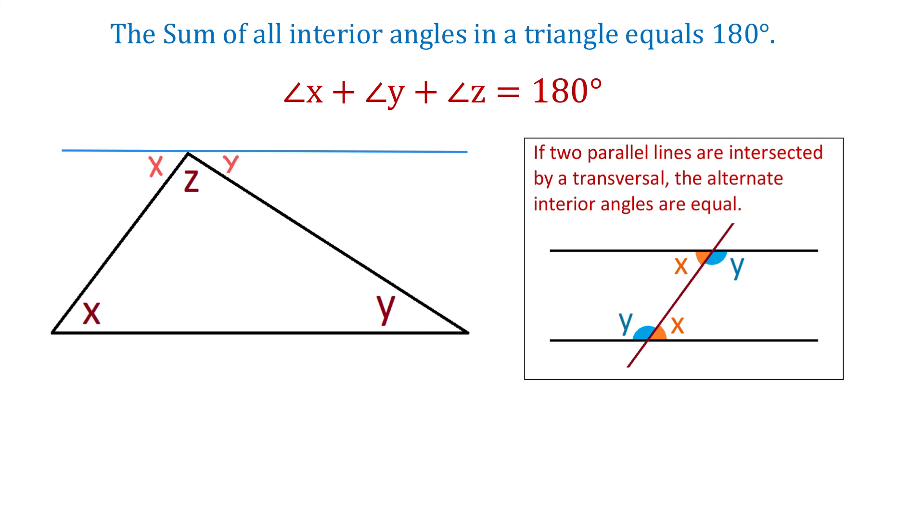And now here we have all three angles x, y, and z. And the sum of these three angles equals 180 degrees, because together they form a straight angle. So then, the sum of the interior angles in this triangle equals 180 degrees. Thank you for watching.